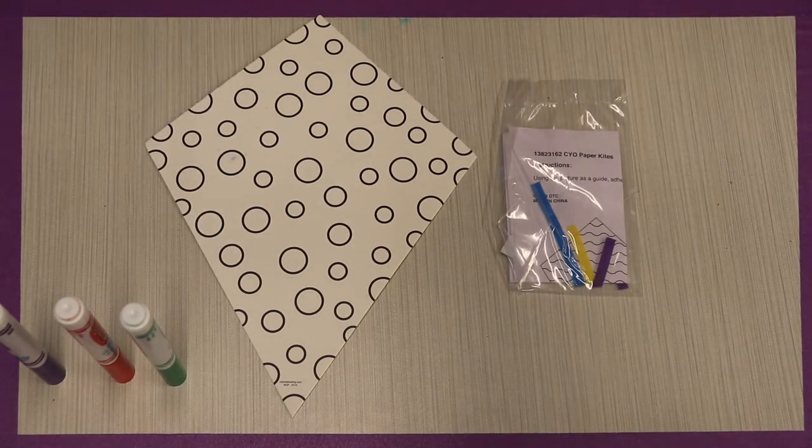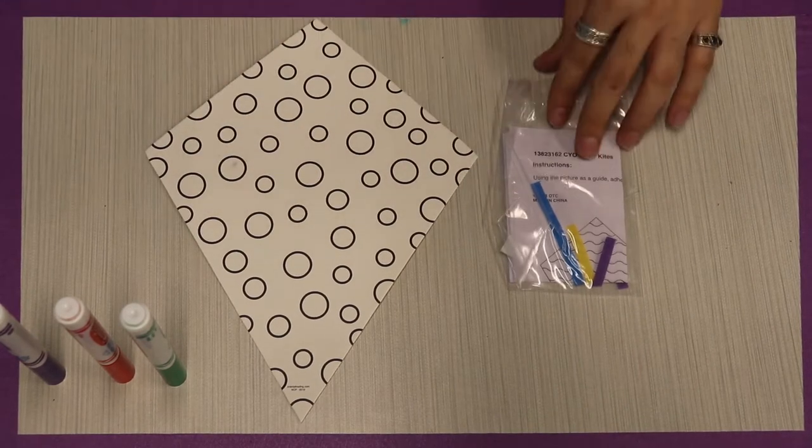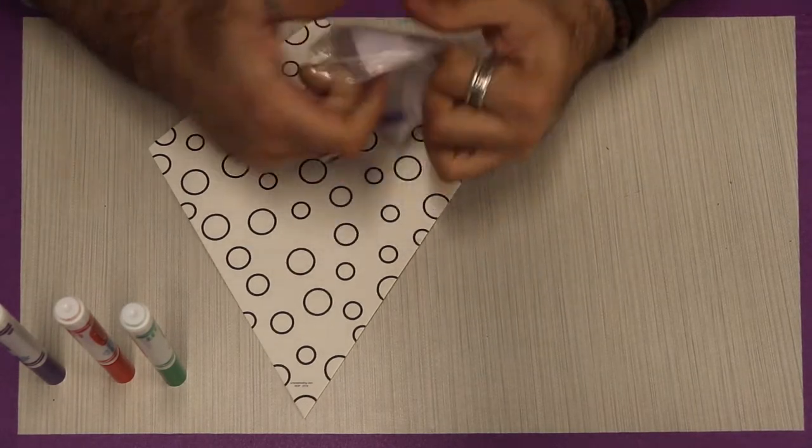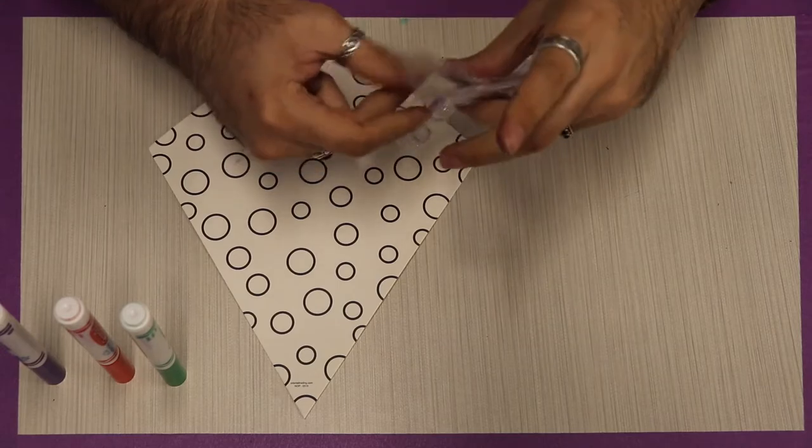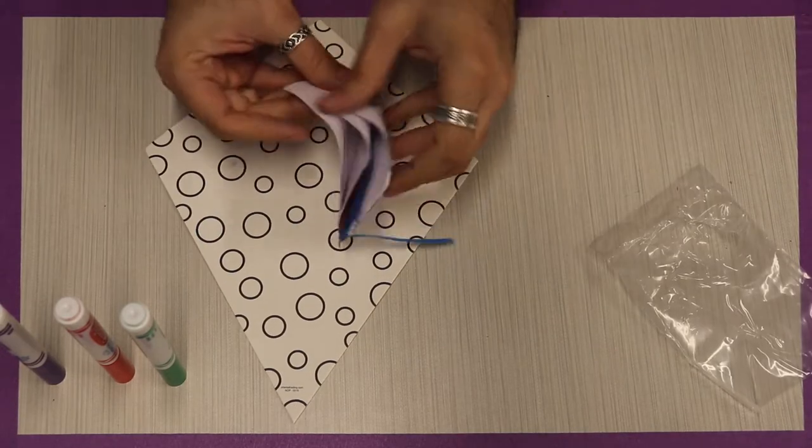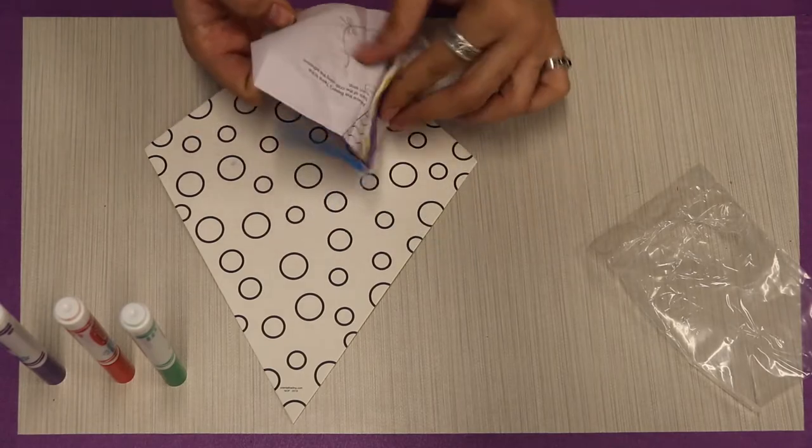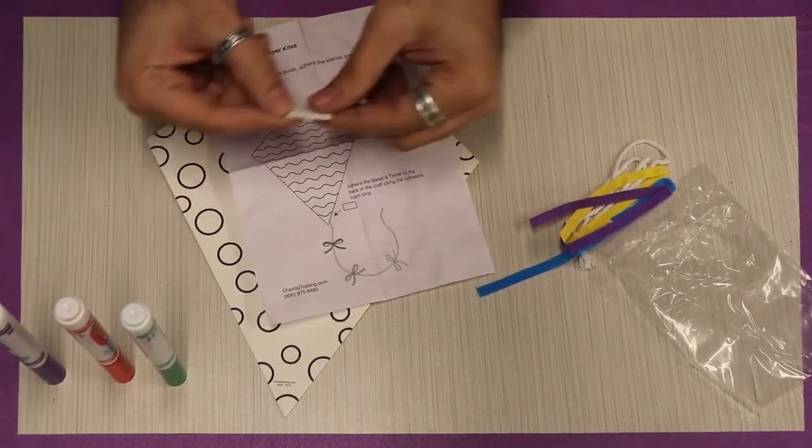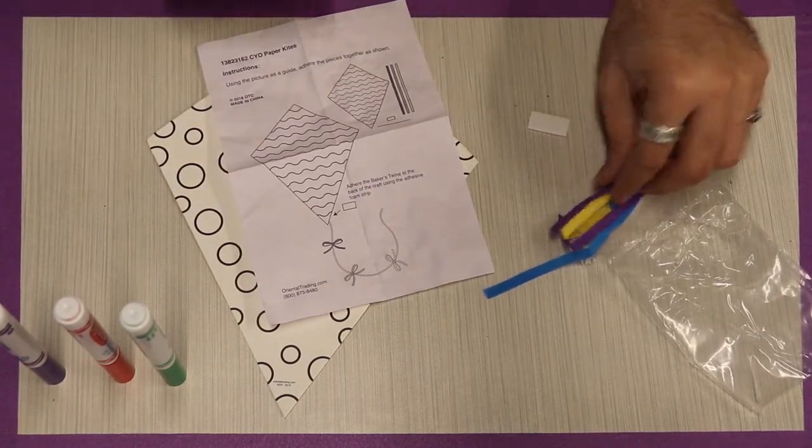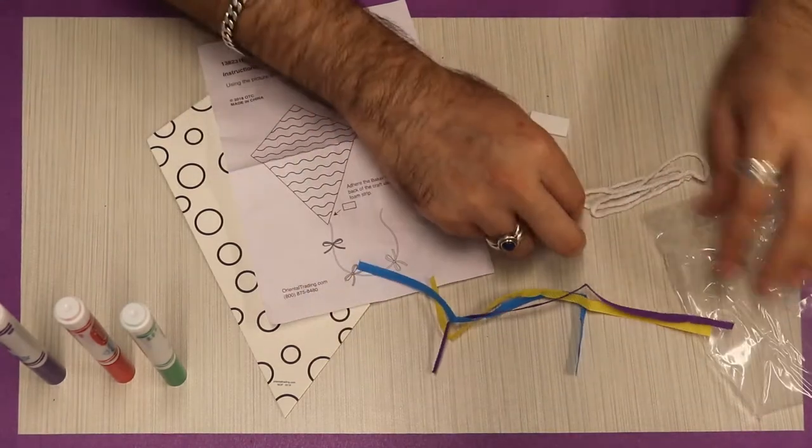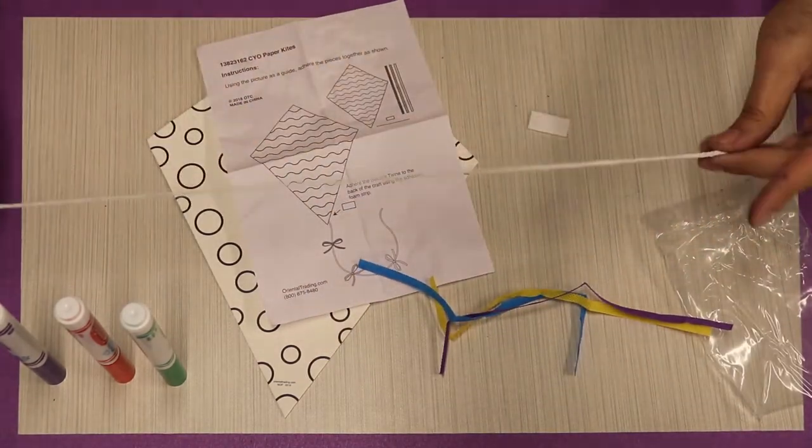So what do you get in your kit? You get your kite and then you get this set right here. Let's open this up together. Inside this little baggie you are going to find the instruction sheet, this little piece right there (that's important, set it aside), these three streamers right here, and this long piece of string.